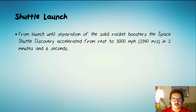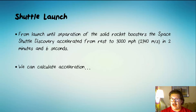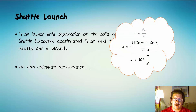If we look at that shuttle launch, from launch until the separation of the solid rocket boosters, the space shuttle Discovery accelerated from rest to about 3,000 miles per hour, which is 1,340 meters per second, in about 2 minutes and 6 seconds. From that data, we could definitely calculate the acceleration if we wanted to, but we don't particularly care about that.